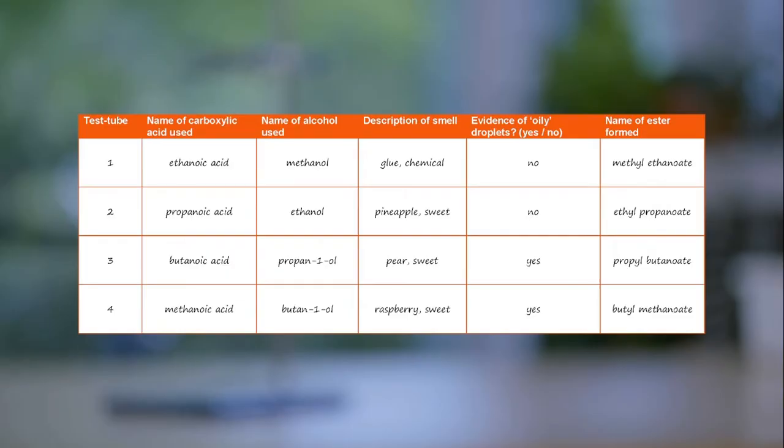Here is the completed results table. All four condensation reactions produced a distinct smell of an ester compound. The ester from test tube 1 smelt like glue, whereas the esters from test tubes 2, 3 and 4 all smelt sweet with fruit smells.